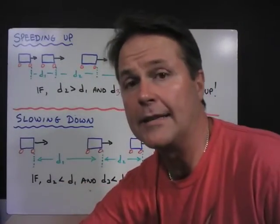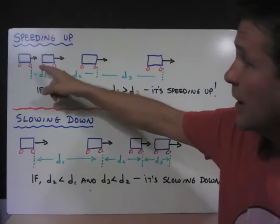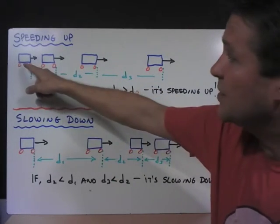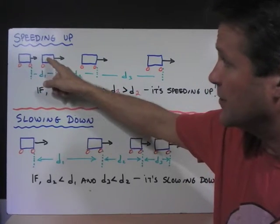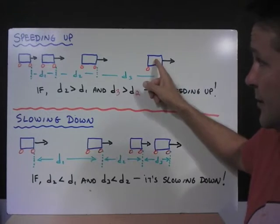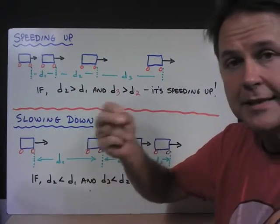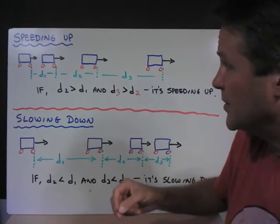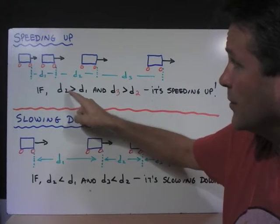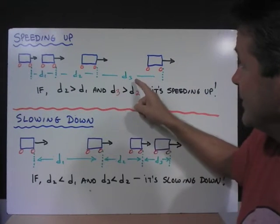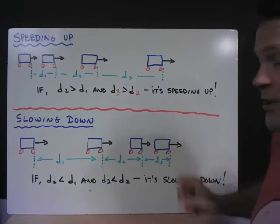Let's look at a couple of examples of strobe photos. Here's an example of a car speeding up. We see that the car starts in this position, and then one second later it's here, and then two seconds later it's there, and then three seconds later it's there. We see that the distance that it travels from second to second increases in sequence. So if d2 is greater than d1 and d3 is greater than d2, the object is speeding up.